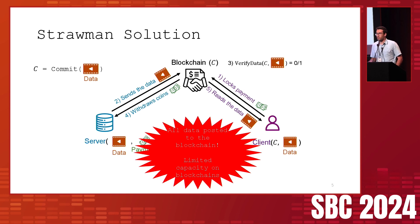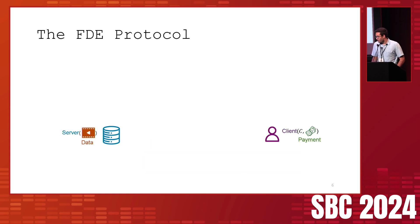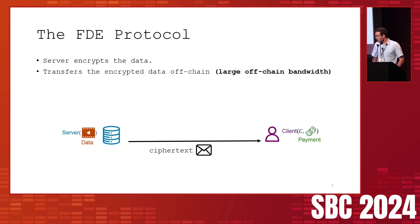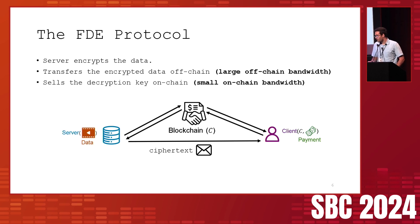To give an example, posting one megabyte of data to Ethereum even after all recent updates would still cost around $2,500. In our protocol, the server first encrypts the data, then transfers the encrypted data off-chain — so most data goes to the client without touching the blockchain. Since the data is encrypted, the client doesn't know if it received the correct data. So the server sells the decryption key on-chain, meaning only a succinct decryption key touches the chain.